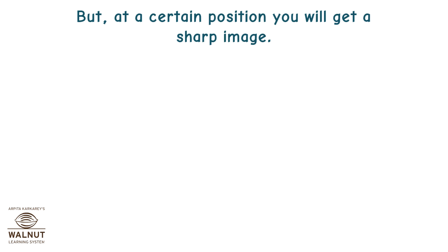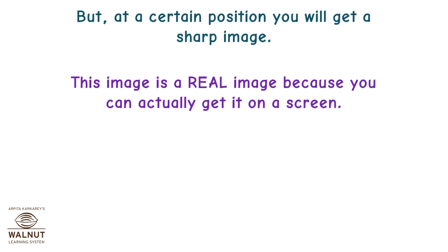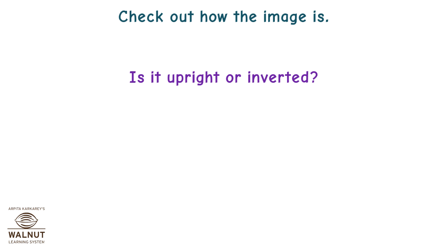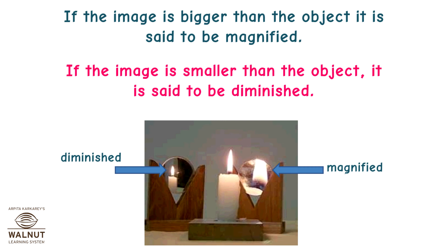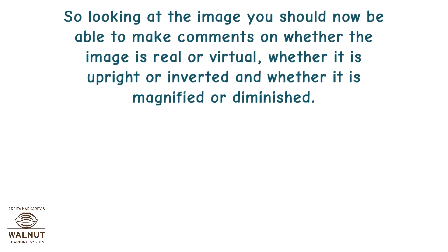At a certain position, you will get a sharp image on the screen. This image is a real image because you can actually get it on a screen. Check out how the image is — is it upright or inverted? Is it the same size as the object, or bigger or smaller? If the image is bigger than the object, it is said to be magnified. If the image is smaller than the object, it is said to be diminished. So looking at the image, you should now be able to comment on whether the image is real or virtual, upright or inverted, and magnified or diminished.